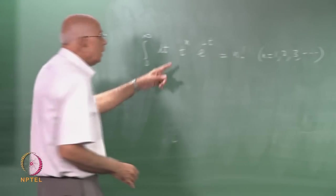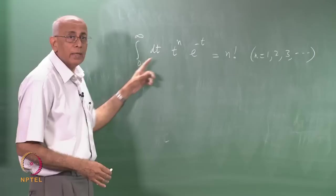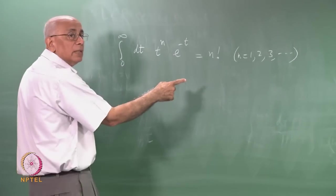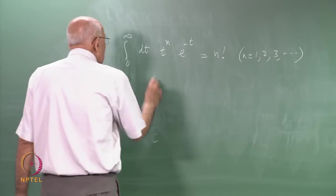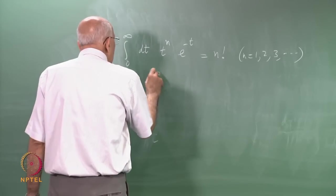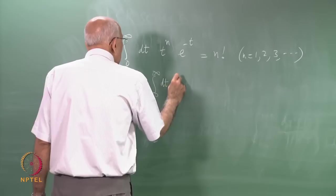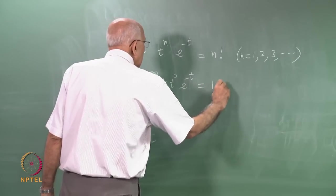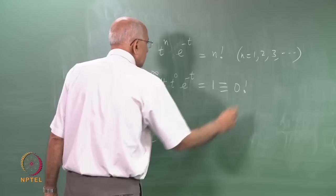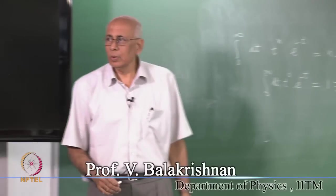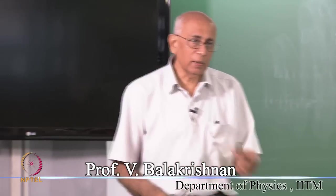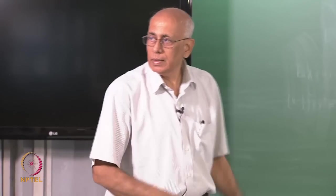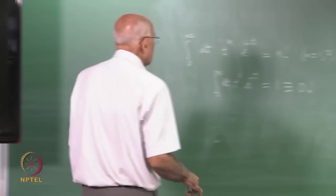Now of course if you put n equal to 0, then you again get unity. So you could in principle use this integral to define the integral from 0 to infinity of dt t to the 0, equal to 1, equal to 0 factorial. So you can use this integral to define what is meant by 0 factorial, which as you know is taken to be unity, and the reason is this.